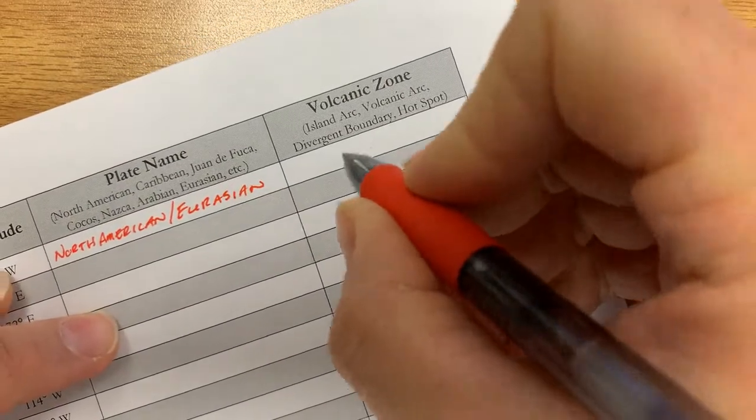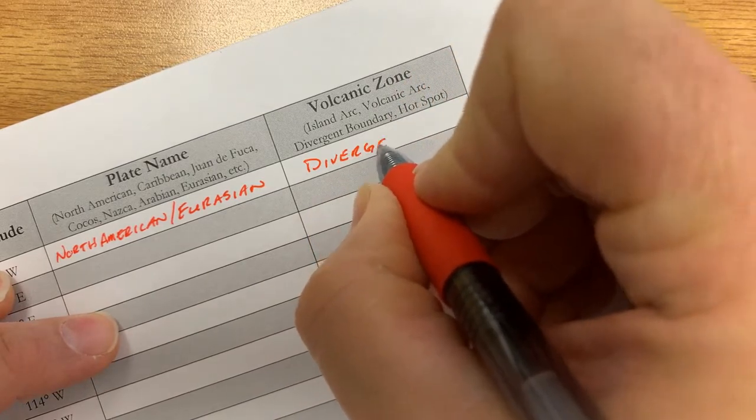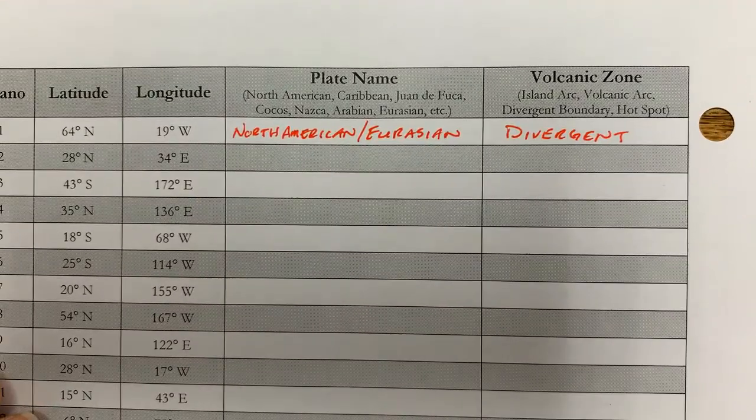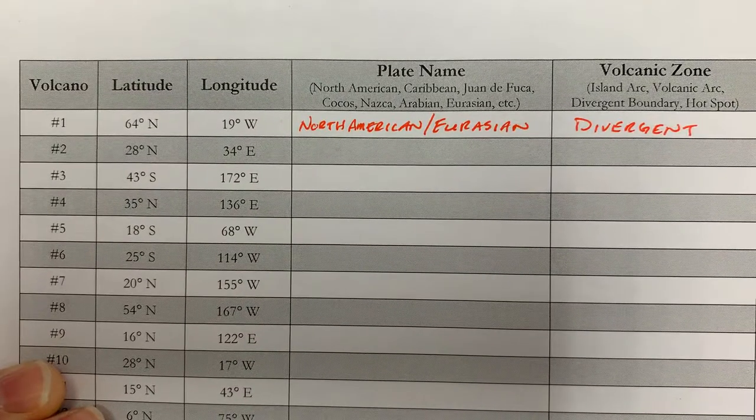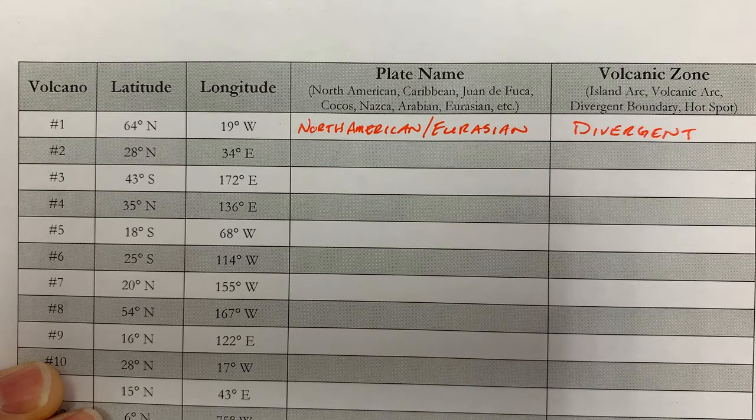Further, I know that that volcanic zone is a divergent boundary. I know that because Iceland is one of our prime examples of a divergent boundary. So that's the volcanic zone. That's how you do this section in this lab.